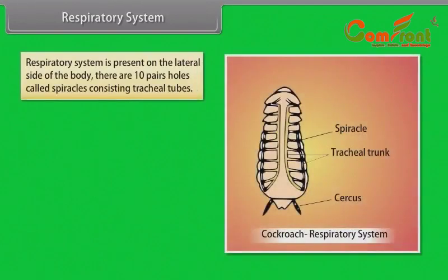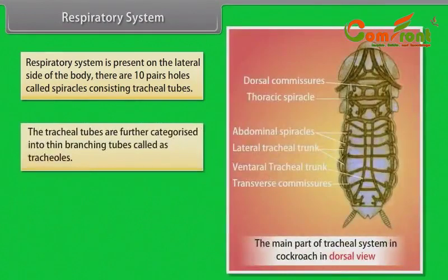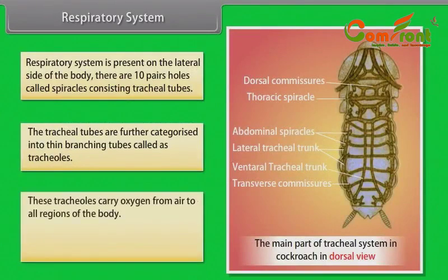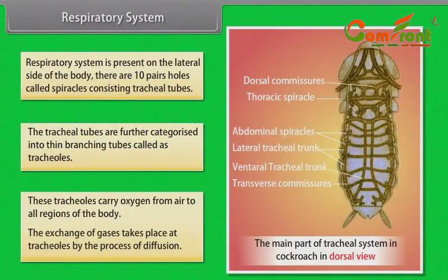Respiratory System: The respiratory system is present on the lateral side of the body. There are 10 pairs of holes called spiracles consisting of tracheal tubes. The tracheal tubes branch into thin tubes called tracheoles, which carry oxygen from air to all regions of the body. Exchange of gases takes place at the tracheoles by the process of diffusion.